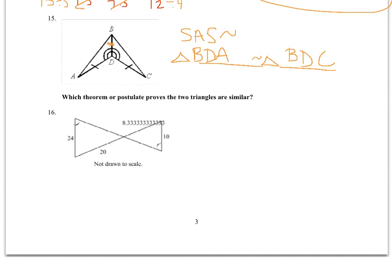My last problem here is 16. I see they've given me one set of congruent angles here and here. They've also given me some sides, but I have vertical angles. So I know that these two angles are going to be congruent, which means right away, angle, angle similarity proves that these two triangles are similar. And it only asks me what theorem or postulate I need. It does not ask me for a similarity statement. So I'm good to go to the next problem.